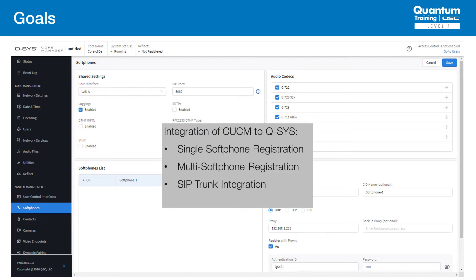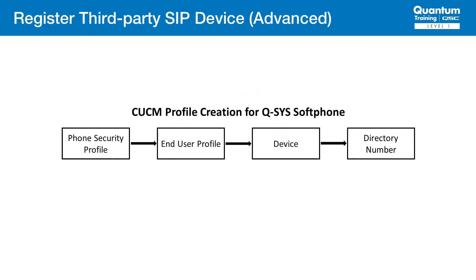In a future workshop, we'll address SIP trunk integration. Next, we will configure a system with multiple soft phones. The steps to configure this are similar but slightly different in CUCM and for the Q-SYS soft phone. First, we create the security profile that will be used for the soft phones. This is shared by all of the soft phones.